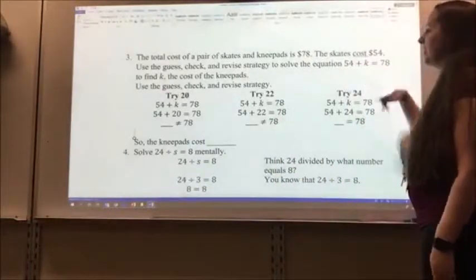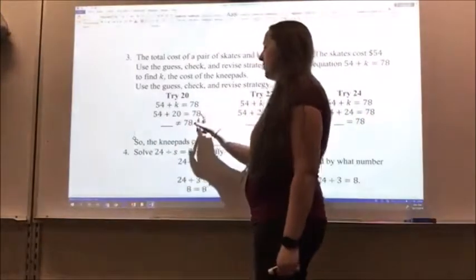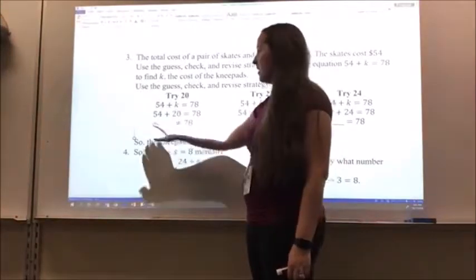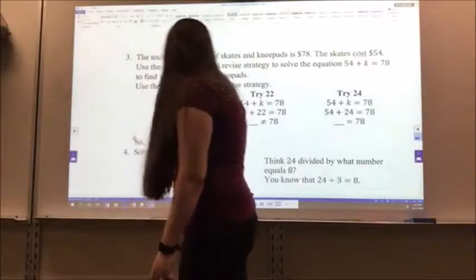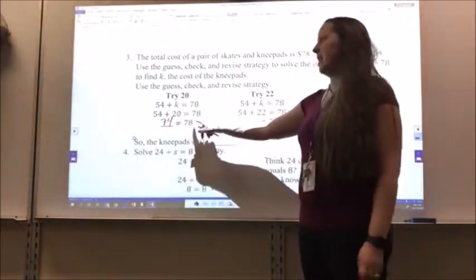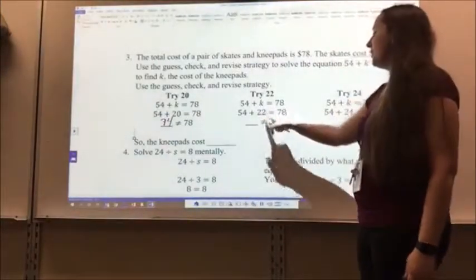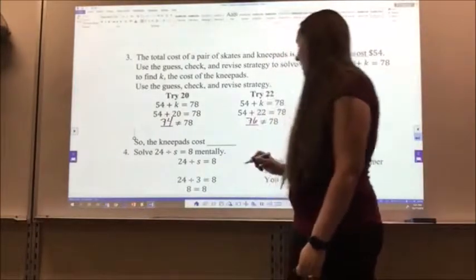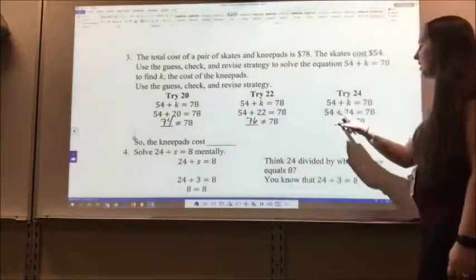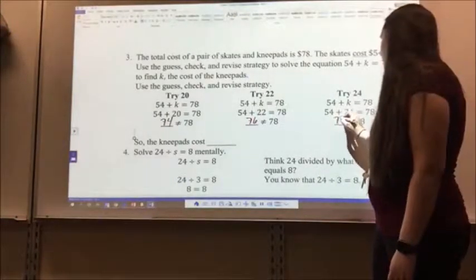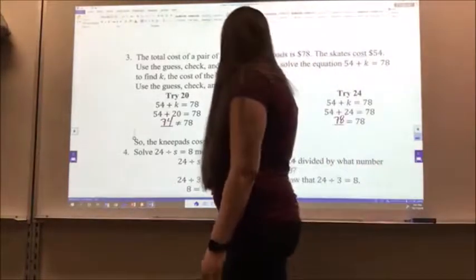54 plus K equals 78, and I substitute in 20 for K. 54 plus 20 is 74. 74 is not equal to 78, but it's really close. So I'm going to try 22. 54 plus 22 is 76. Also not quite there yet, so I'm going to go up again by 2. 54 plus 24 does equal 78, so 24 is my answer. So the knee pads cost $24.